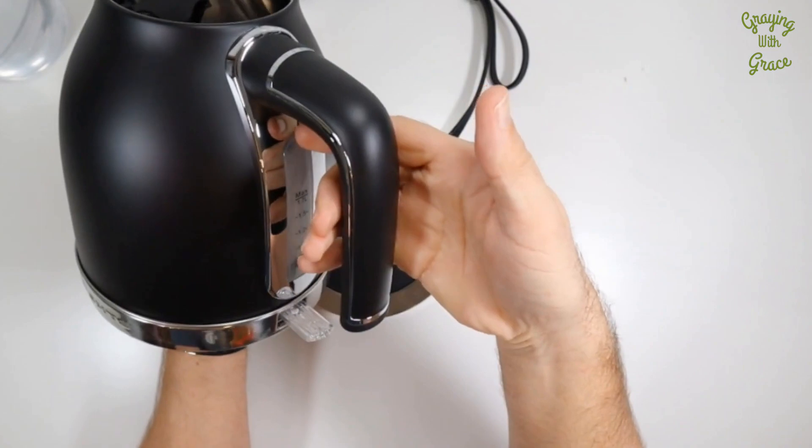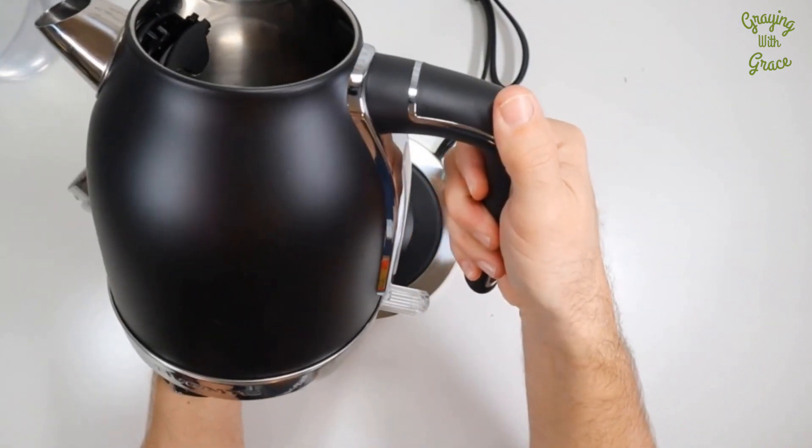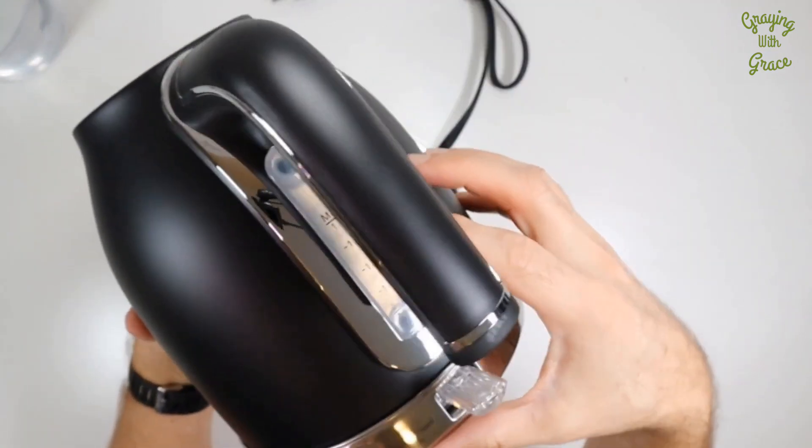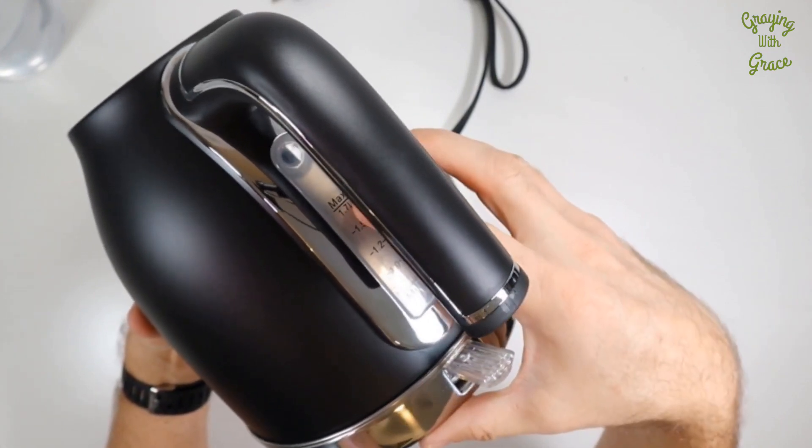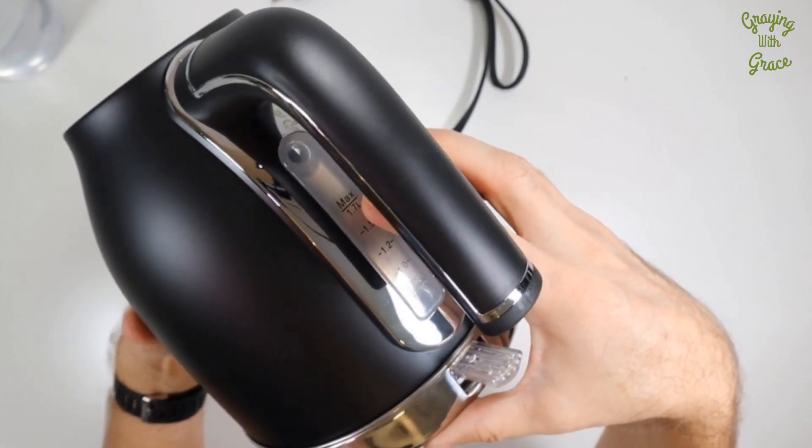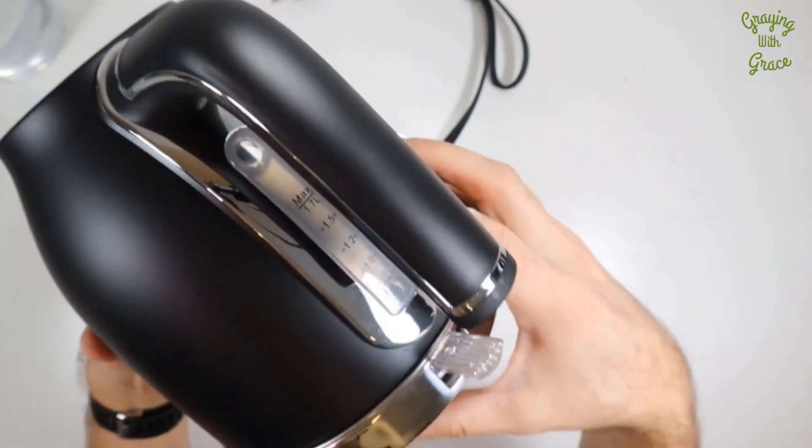It's got a nice big thick handle that's easy to hold on to. And then on the inside, you've got measurement markings so you can see how much water you have in there. This does have a maximum of 1.7 liters, which is enough for 7 or 8 cups of tea.